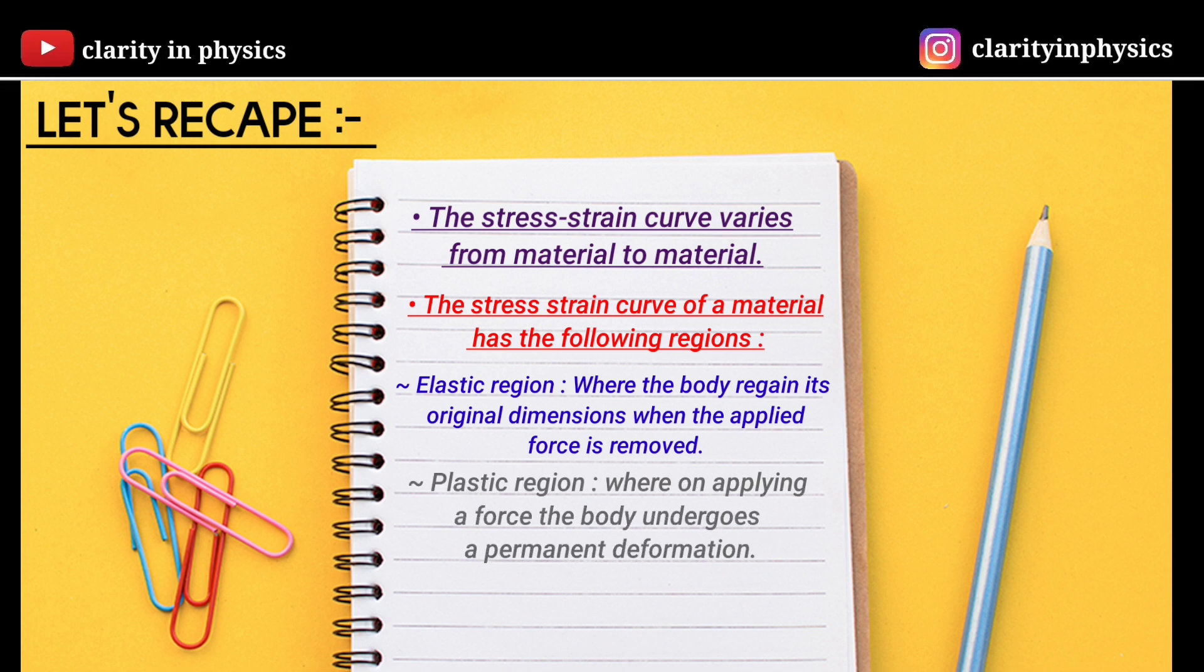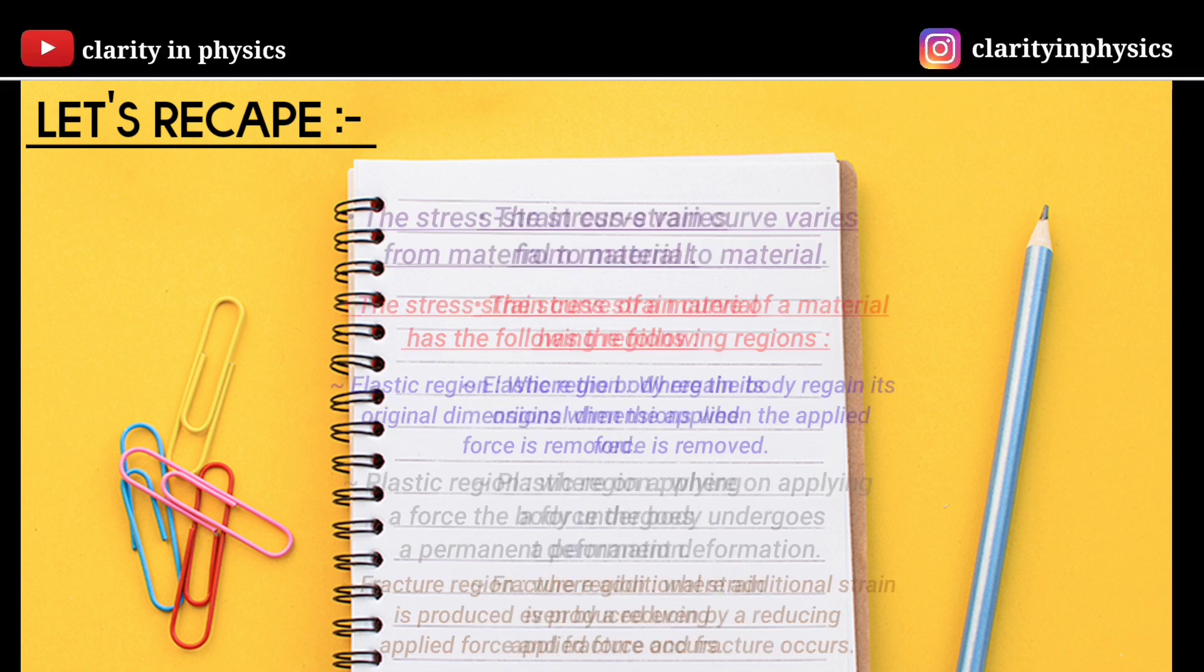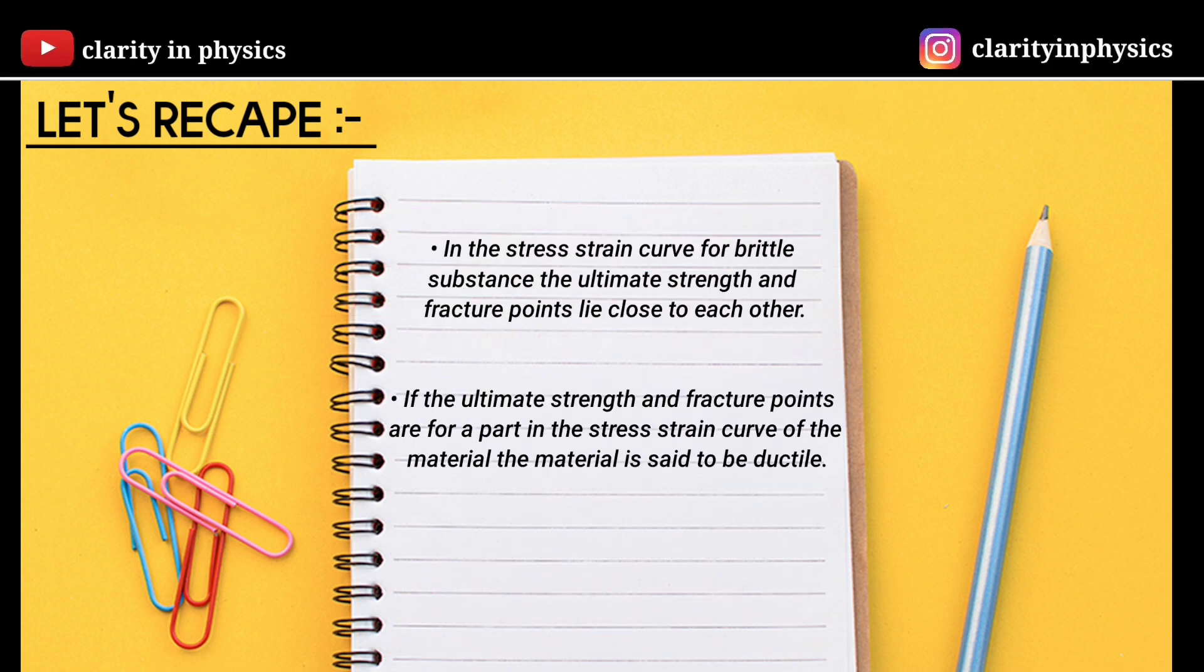Plastic region where on applying a force the body undergoes a permanent deformation. Fracture region where additional strain is produced even by a reduced applied force and fracture occurs. In the stress-strain curve for a brittle substance, the ultimate strength and fracture points lie close to each other. If the ultimate strength and fracture points are far apart in the stress-strain curve of a material, the material is said to be ductile.